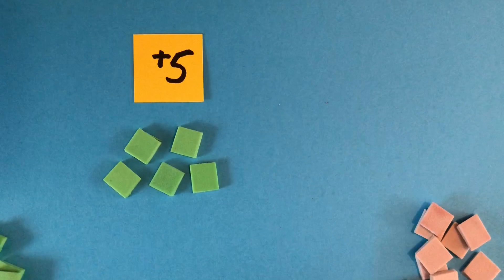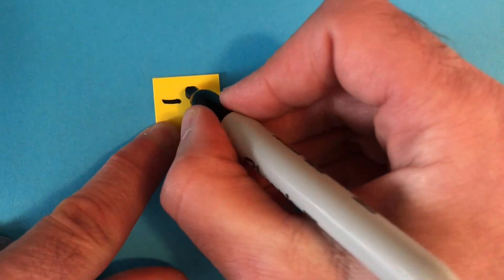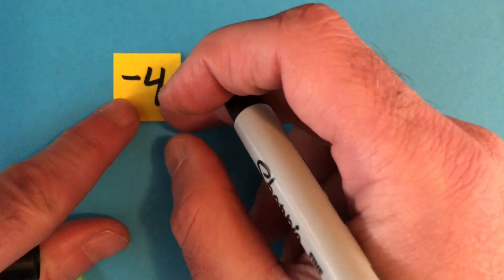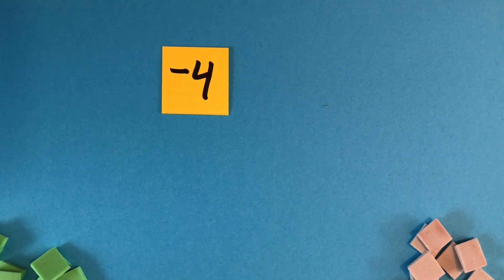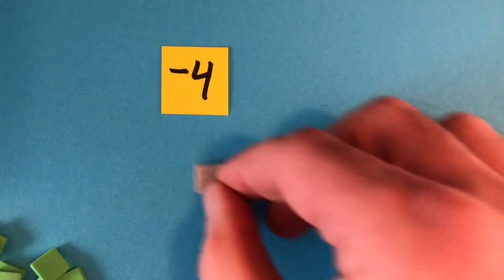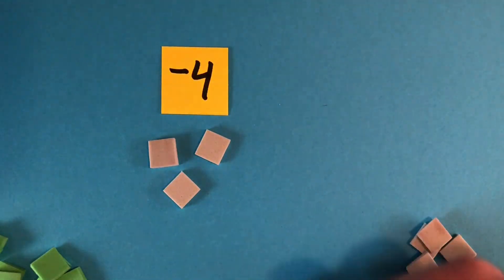We could then write negative four on a slip of paper. And we could say that the minus sign in the front, when we see it like this, this means negative. So this number is negative four. Can you show this number with the algebra tiles? And so on.